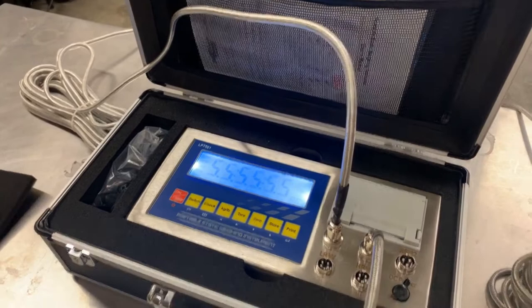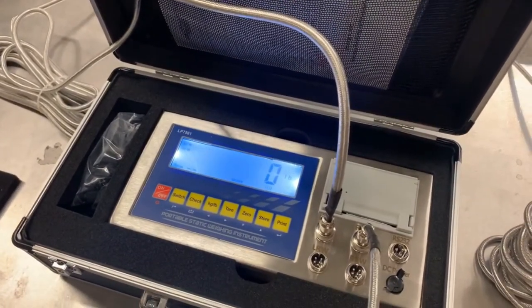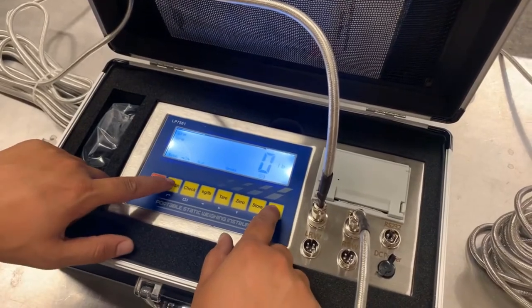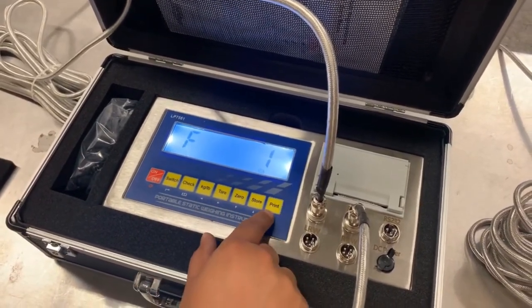Okay, today we're going to demonstrate how to calibrate the LP 7561 indicator. The first thing you want to do is hit the switch and print button. It will bring you to F1. You have to press print to enter.